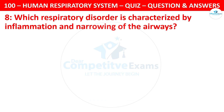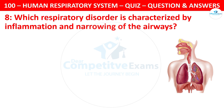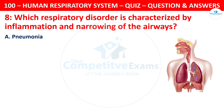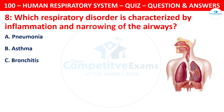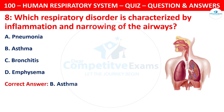Question 8. Which respiratory disorder is characterized by inflammation and narrowing of the airways? Your options are: pneumonia, asthma, bronchitis, or emphysema. The correct answer is B, asthma.